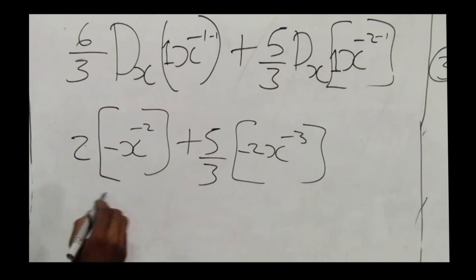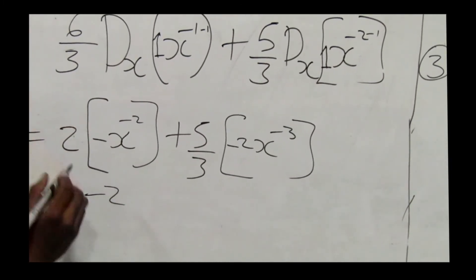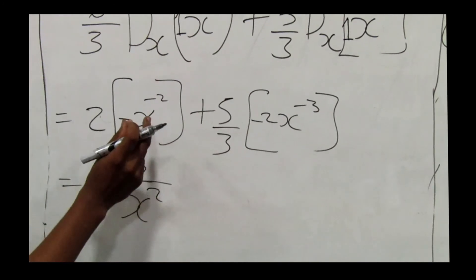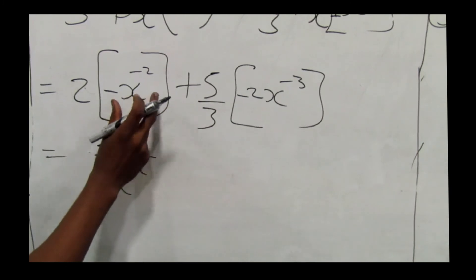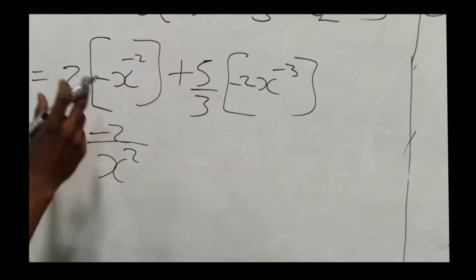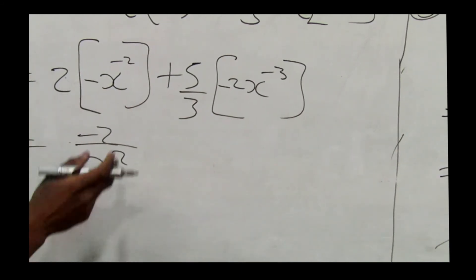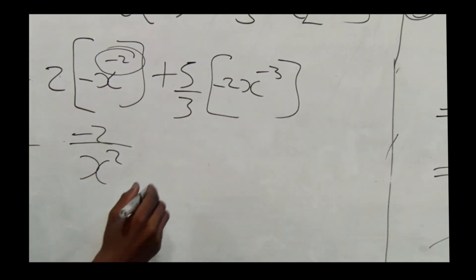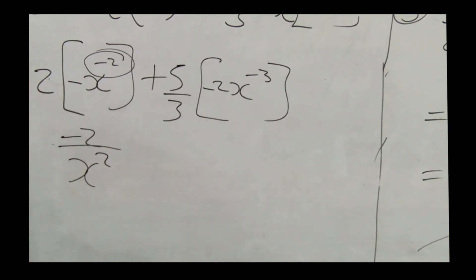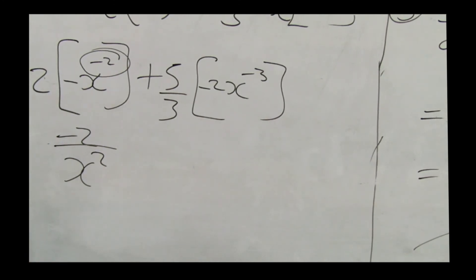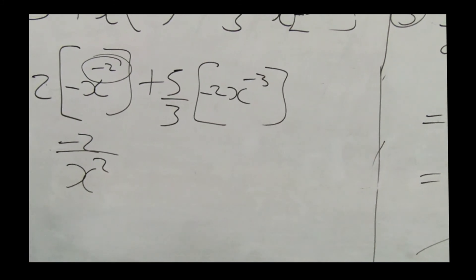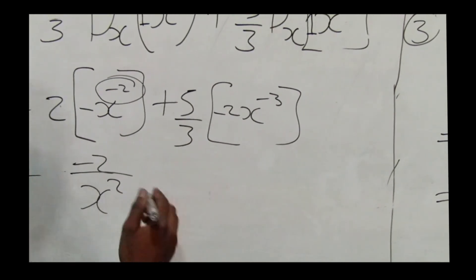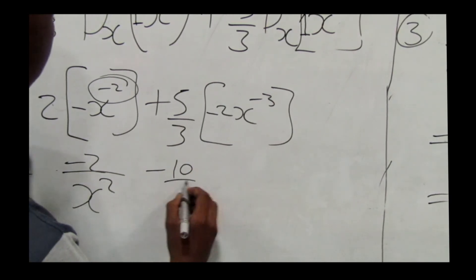Simplifying: we get negative 2 over x squared, since we make the exponent of x positive by moving it to the denominator. Then for the second term: 5 over 3 times negative 2 gives negative 10 over 3.